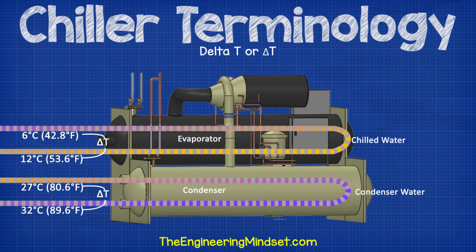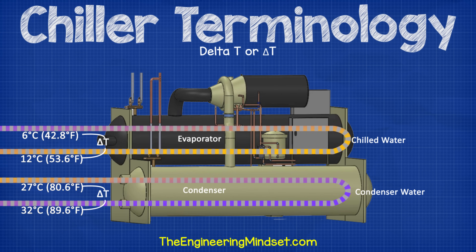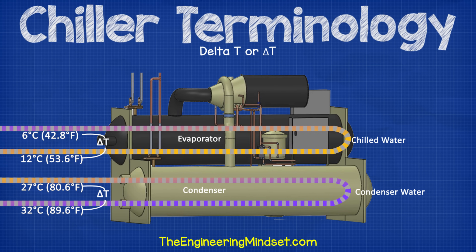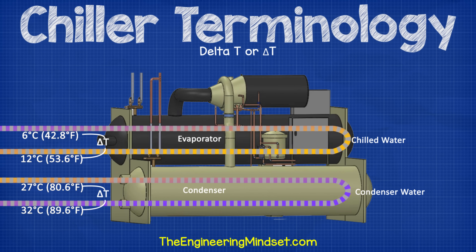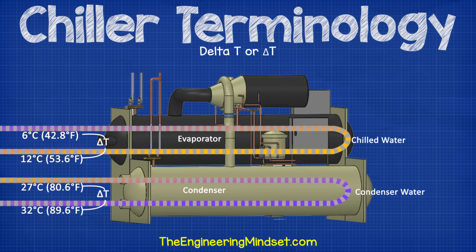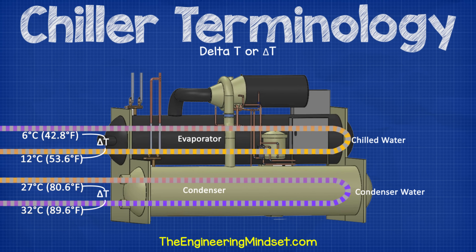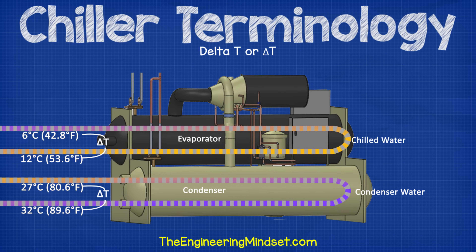Delta T. This refers to the temperature difference between the flow and return temperatures of either the chilled or condenser water. A typical temperature difference between the chilled water flow and return would be 6°C, but this can vary. A high delta T means the chiller is working hard and the efficiency should also be high, whereas a low delta T means that the chiller is likely operating inefficiently and there are likely design issues with the cooling system causing this.